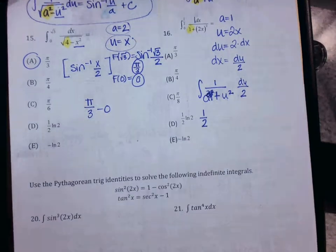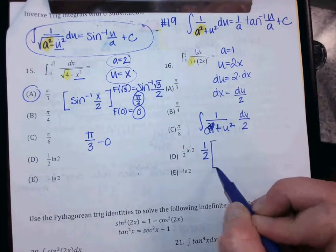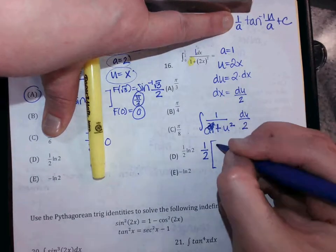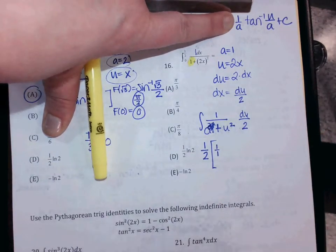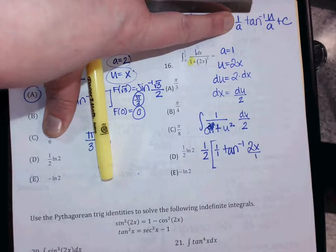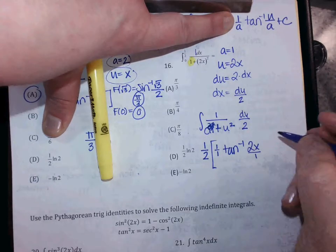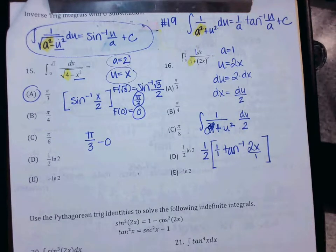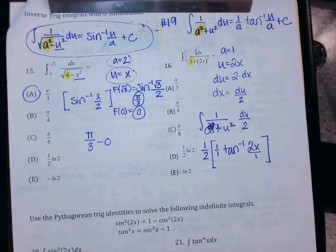Now applying our formula: 1 over A is 1 over 1, which is just 1. Then inverse tan of (U over A) — which is inverse tan of (2x over 1). No plus C because I have endpoints to plug into. Did we leave this in terms of U or did we go back to x's? We go back to x's. If you go back to x's, you use the original endpoints. So we're going to plug in one half and 0 into the expression one half times inverse tan of (2x).